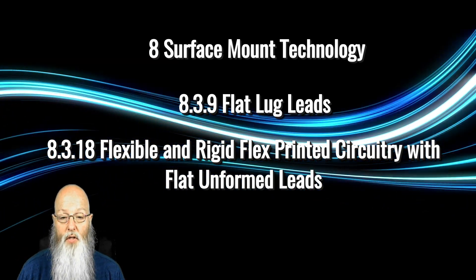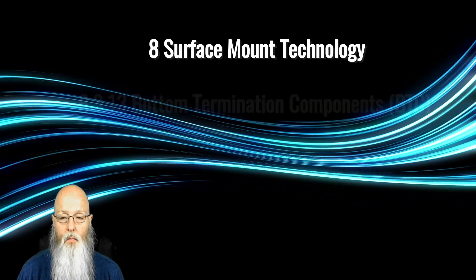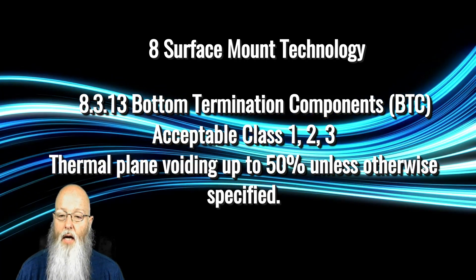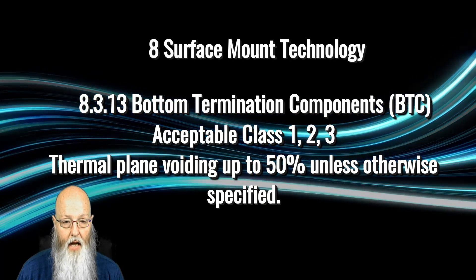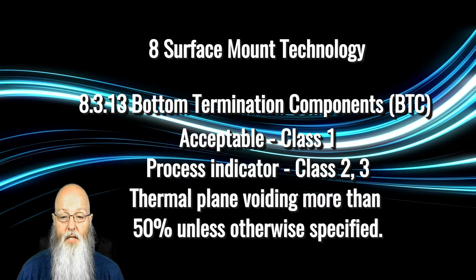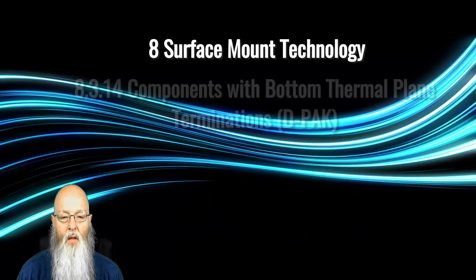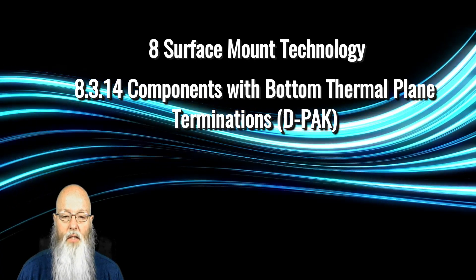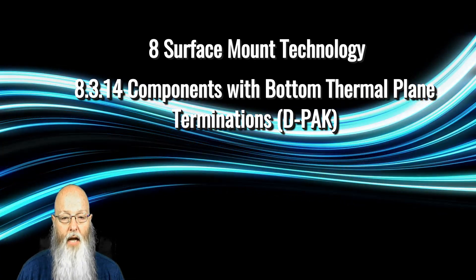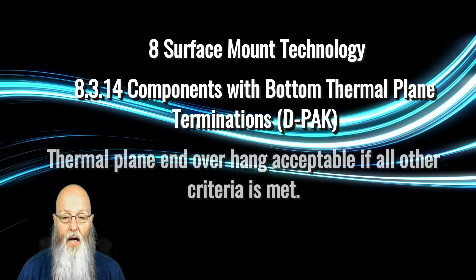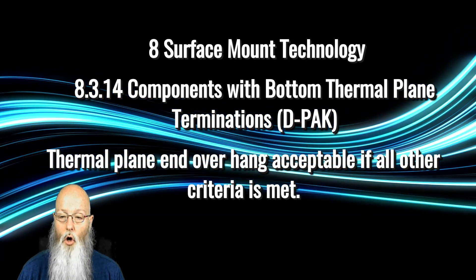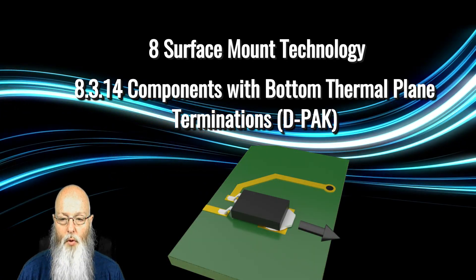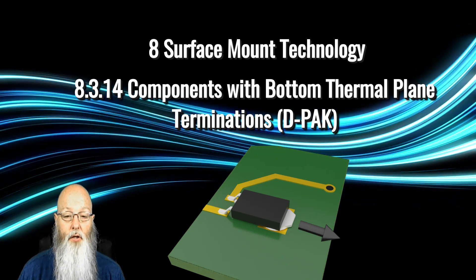The criteria for both types of leads remains unchanged. BTCs, or bottom termination components, in paragraph 8.3.13 has been added that the thermal plane can have up to 50% voiding if no other criteria has been established by the customer. Components with bottom thermal plane terminations, more commonly known as DPACs, have a slightly relaxed criteria in 8.3.14. That section now allows overhang of the thermal plane as long as all other criteria have been met. Data was submitted to the committee showing thermal plane overhang is not a failure mechanism when considered as a single condition.